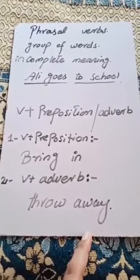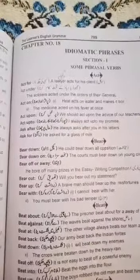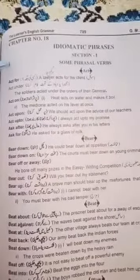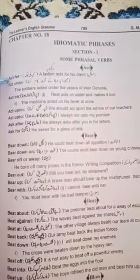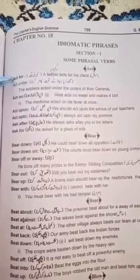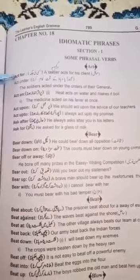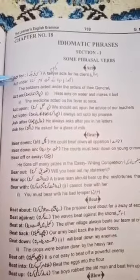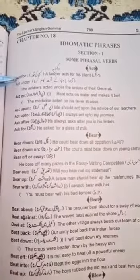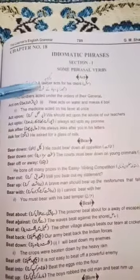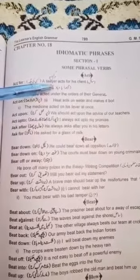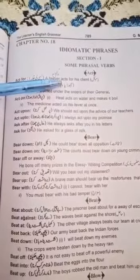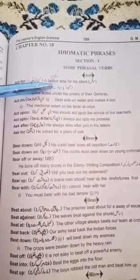Now let's start from basic phrasal verb examples. Set 1 begins. The first phrasal verb is 'act for,' which means کسی کی جگہ یا کسی کے لیے کام کرنا (to work in place of someone). Example: 'A lawyer acts for his client.' Here 'lawyer' is third person singular, so we added 's' to the verb — this is present indefinite tense.